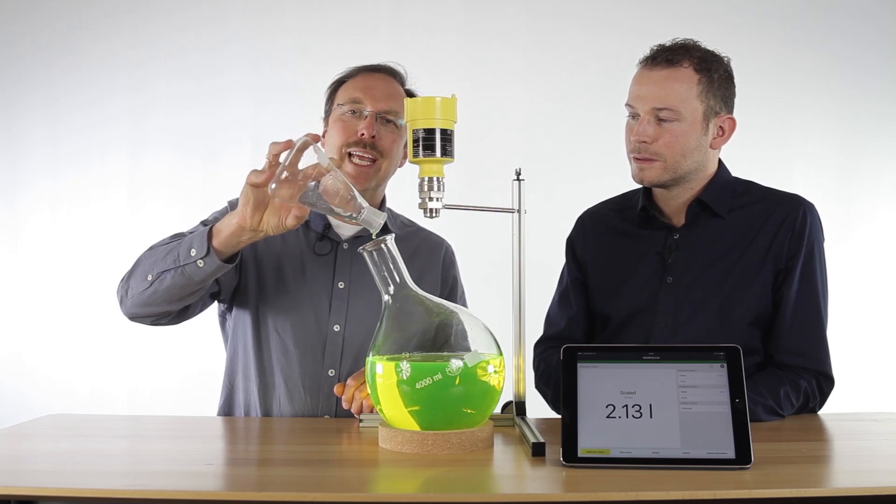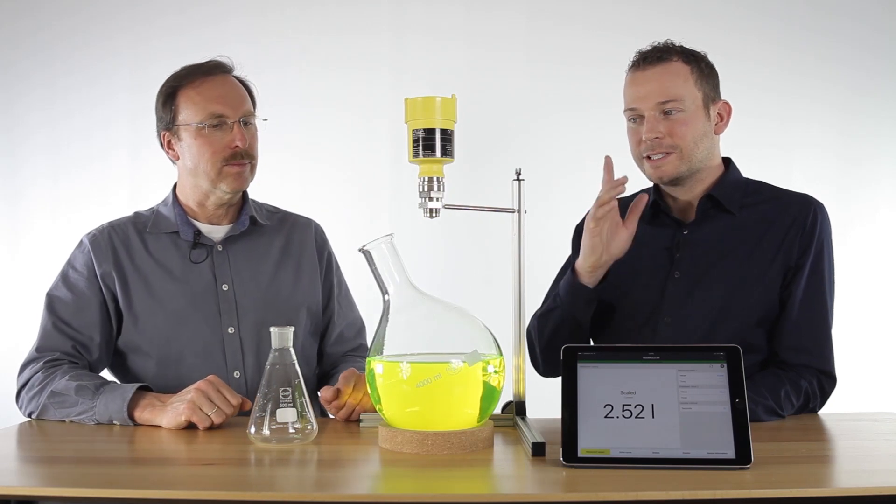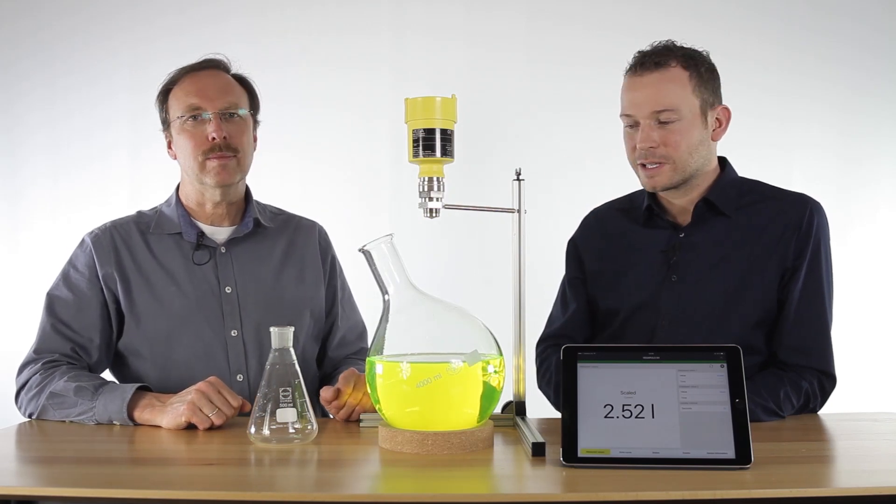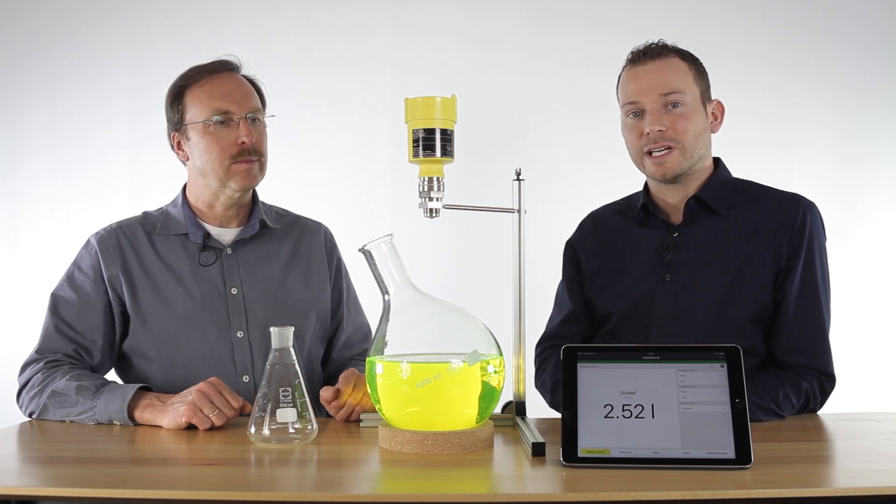We changed approximately half a liter of this liquid. So you see, the Vega Pulse 64 is perfect for small tanks measuring through glass as well as for big tanks measuring through side glass.